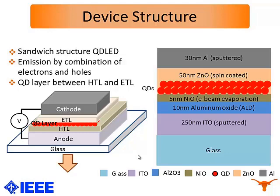We are using a 10 nanometer aluminum oxide layer deposited through atomic layer deposition. This layer mainly acts as an insulation layer and also as a hole injecting layer. We are using a 5 nanometer nickel oxide layer as the main hole transporting layer, and the thickness of this layer is very important because it has to be transparent for the emission to be seen clearly. On top of the quantum dot layer we use a 15 nanometer zinc oxide nanoparticle layer which is spin coated. This is the main novelty of our device structure because in most literature the electron transporting layer is usually sputtered onto the quantum dot layer, which causes quenching of the quantum dots. We are using a 13 nanometer thickness aluminum layer which is sputtered on as the cathode.